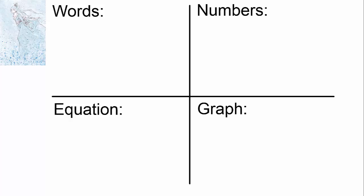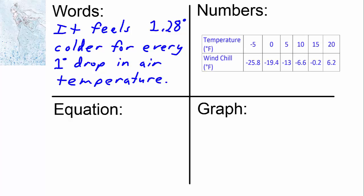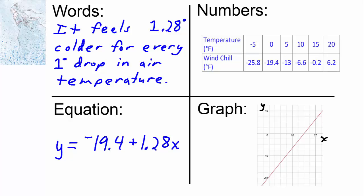We can view the windchill problem several different ways. We can view it in words: it feels 1.28 degrees colder for every 1 degree drop in air temperature. We can view it with numbers — the table showed us the rate of change. We can view it with our equation, which tells us what the windchill is when it's 0 degrees and also shows us our rate of change. And we can view the windchill problem as a graph. These four views show us the same information in different ways.